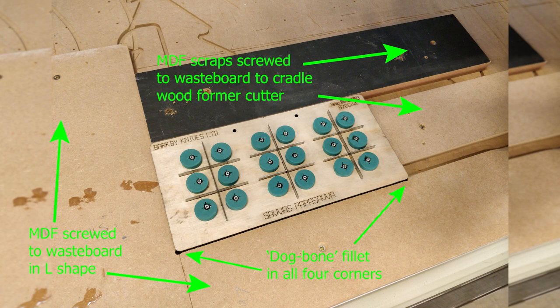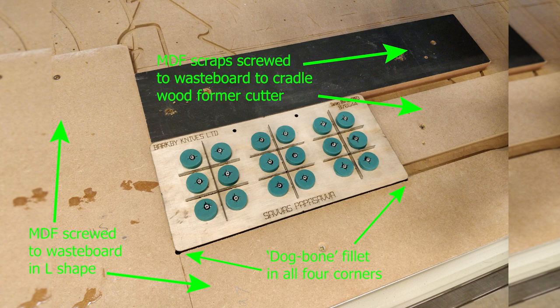Instead I did this myself on a CNC machine by screwing down some scrap material onto the wasteboard and cutting the outer diameter of the woodform cutter with fillets in the corner to ensure the piece would be cradled tightly in a position that I knew I could run a second job to align the new openings exactly where I needed.